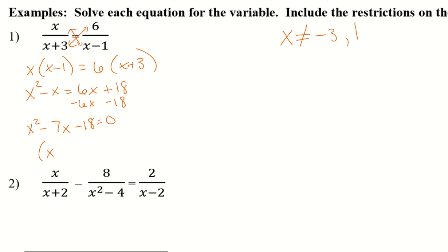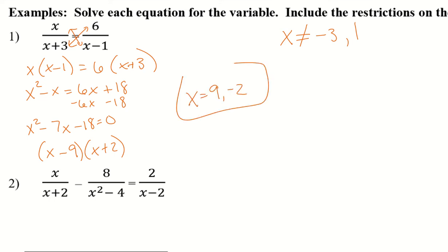Now I can factor. So I have x minus 9 and x plus 2. If I distribute that back out, that will give me my negative 18, and if I add those two together it gives me my negative 7. So my x values are 9 and negative 2 — remember it's the opposite sign from the factored form.